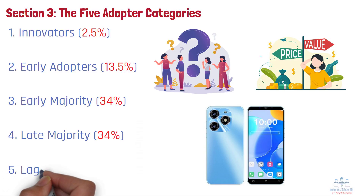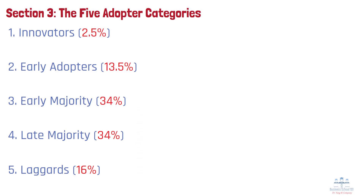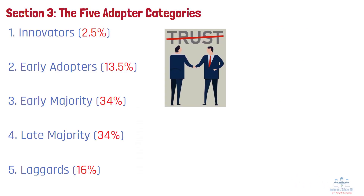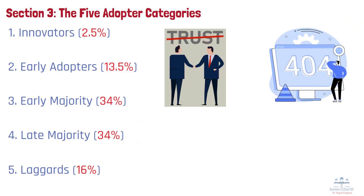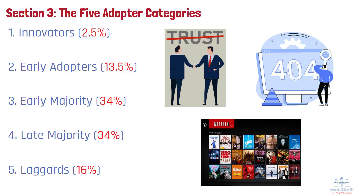Group 5: Laggards, 16%. Laggards are the last to adopt, often due to tradition, low trust in innovation, or limited access. They usually switch only when old solutions become unavailable or obsolete. For example, some consumers only switch to streaming after DVDs stopped being produced or cable providers phased out legacy services.